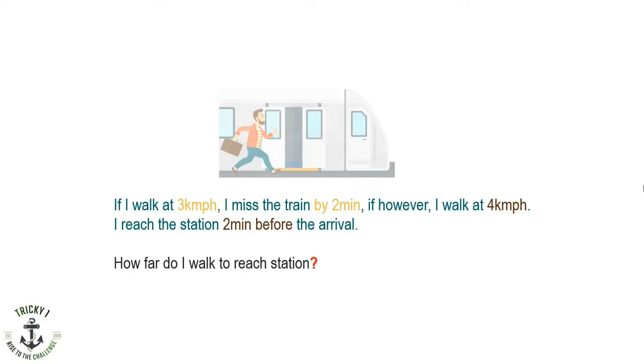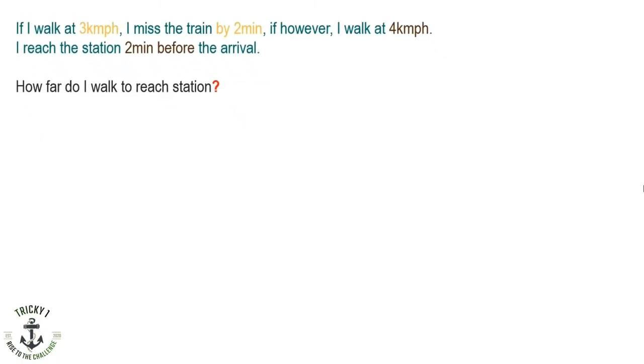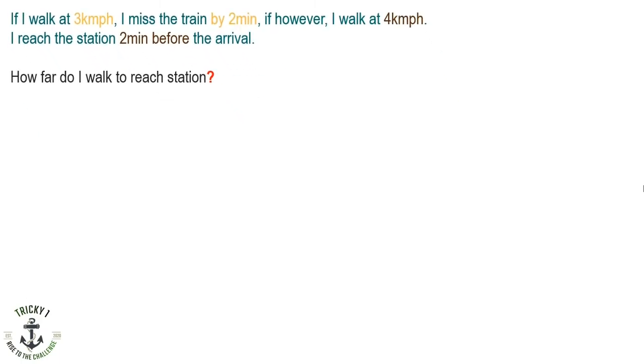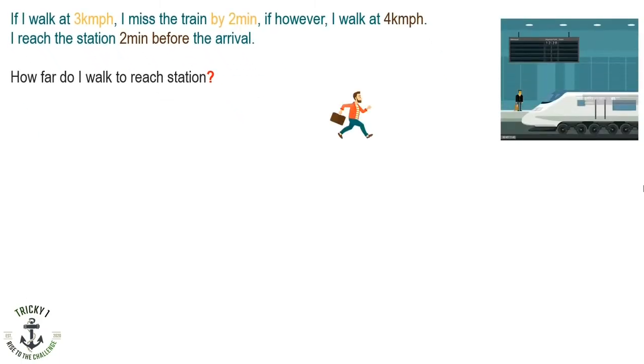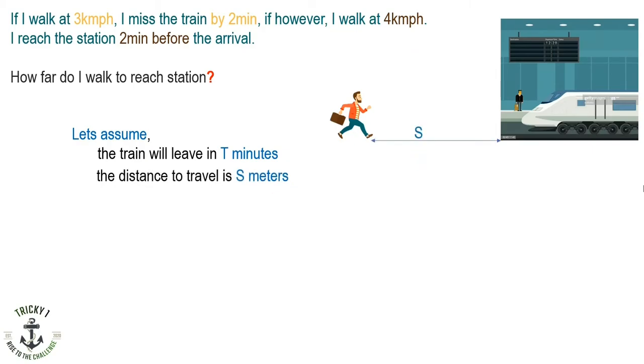If you read the question, you will get to know that the given time is based on the time left to get on the train. Let's assume that the train will leave in T minutes and the distance I need to travel is S meters. And we can use a simple equation: distance equals velocity times time.